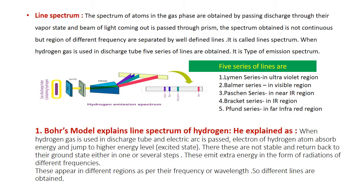First of all, we must remind ourselves what is line spectrum. The line spectrum of atoms in the gas phase is obtained by passing a discharge through their vapour state and the beam of light coming out is passed through a prism. The spectrum obtained is not continuous, just like a rainbow, but regions of different frequencies are separated by well-defined lines. It is known as the line spectrum.